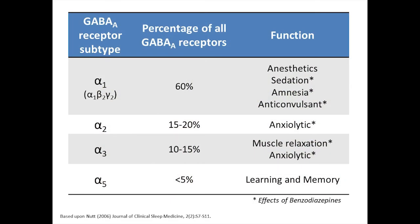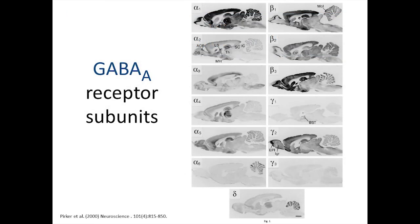To make things even more complicated, there are multiple versions of each subunit type. For example, there are six different forms of the alpha subunit. The majority of GABA-A receptors include alpha-1, alpha-2, alpha-3, or alpha-5 subunits, and each subtype is associated with a different function. These images of staining in rat brains demonstrate that the different subunits are expressed in different brain regions.